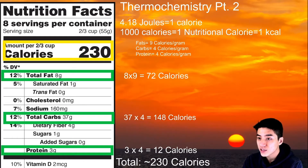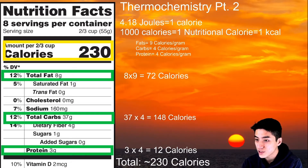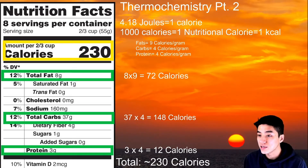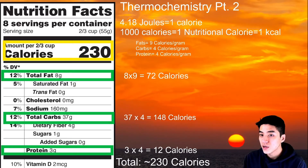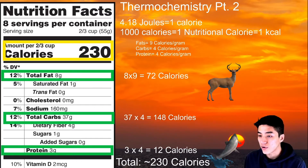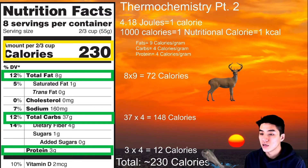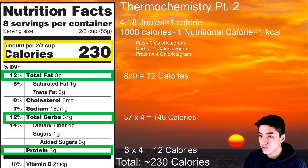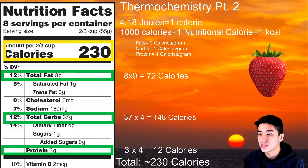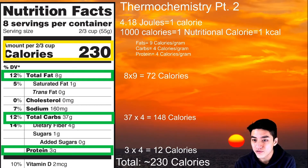Fats have the highest energy content — they have 9 calories per gram — followed by carbs and proteins, which have 4 calories per gram. As a human being, you are programmed to instinctively desire foods rich in fat content because it has the highest number of calories per gram. In a hunter-gatherer society, for example, hunting an animal provides more calories per gram for your efforts than foraging berries all day.